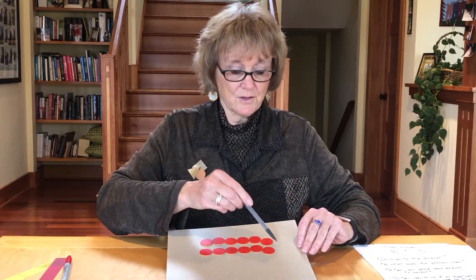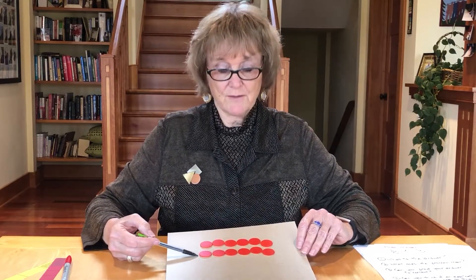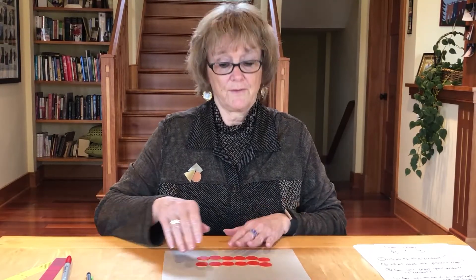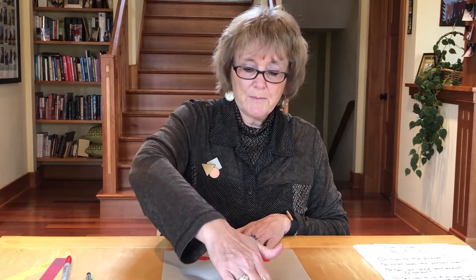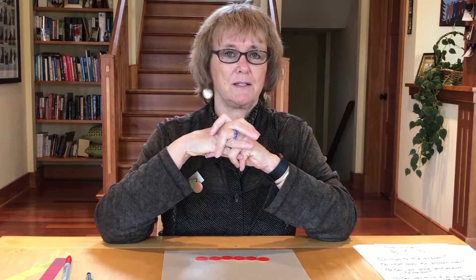In third grade, students learn about a rectangular model for multiplication. The dimensions of the rectangle would be two by six, and we would have an area — our product — of 12. What would it mean if we now multiply a fraction times a whole number? For instance, what would one-half times six mean?